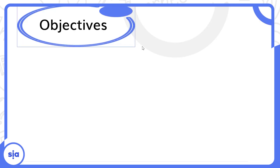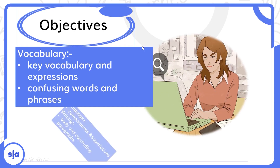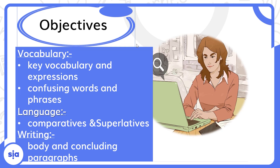Now, let's read the objectives of the lesson together. We're now in Unit 2, Lessons 5 and 6. We'll talk about new words, about the comparatives and superlatives. In writing, we'll talk about body and concluding paragraphs. If we remember that before we talked about introduction, today we'll talk about body paragraphs and concluding paragraphs.